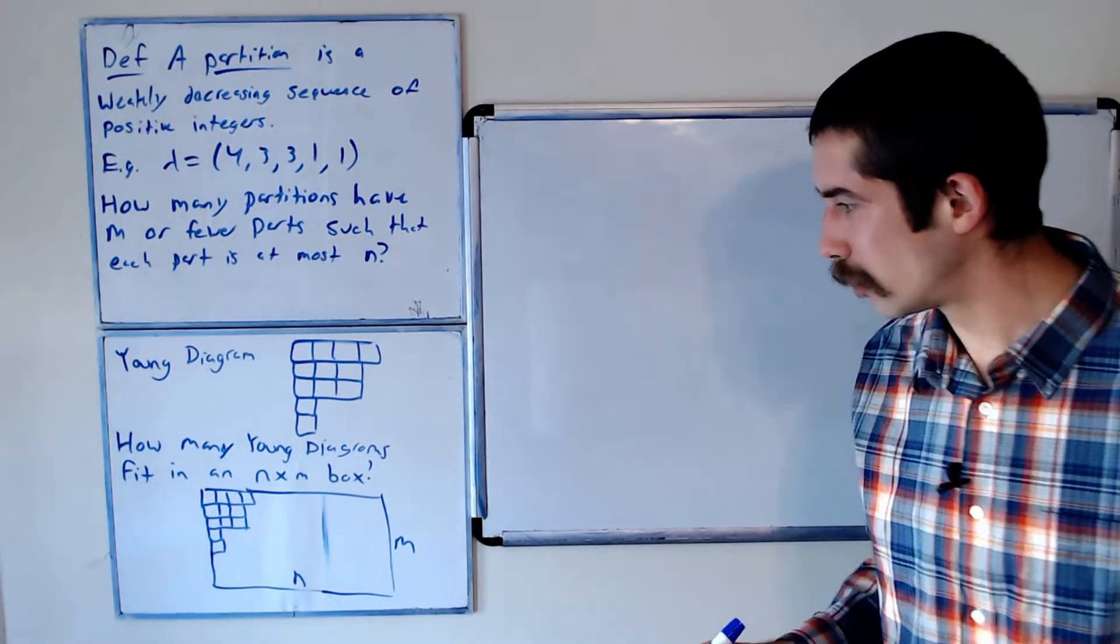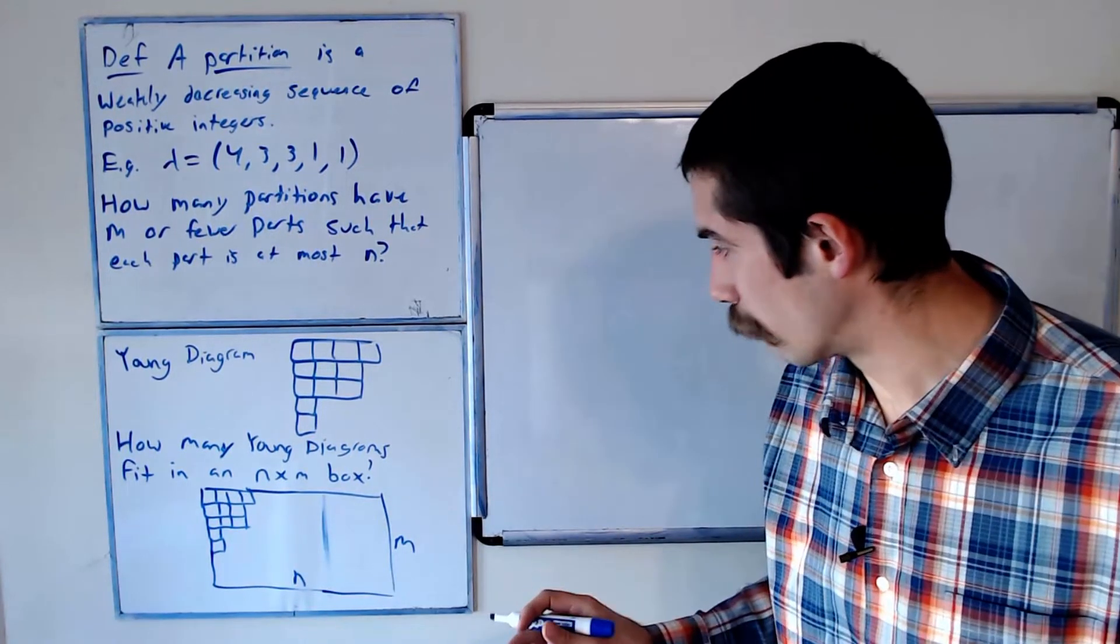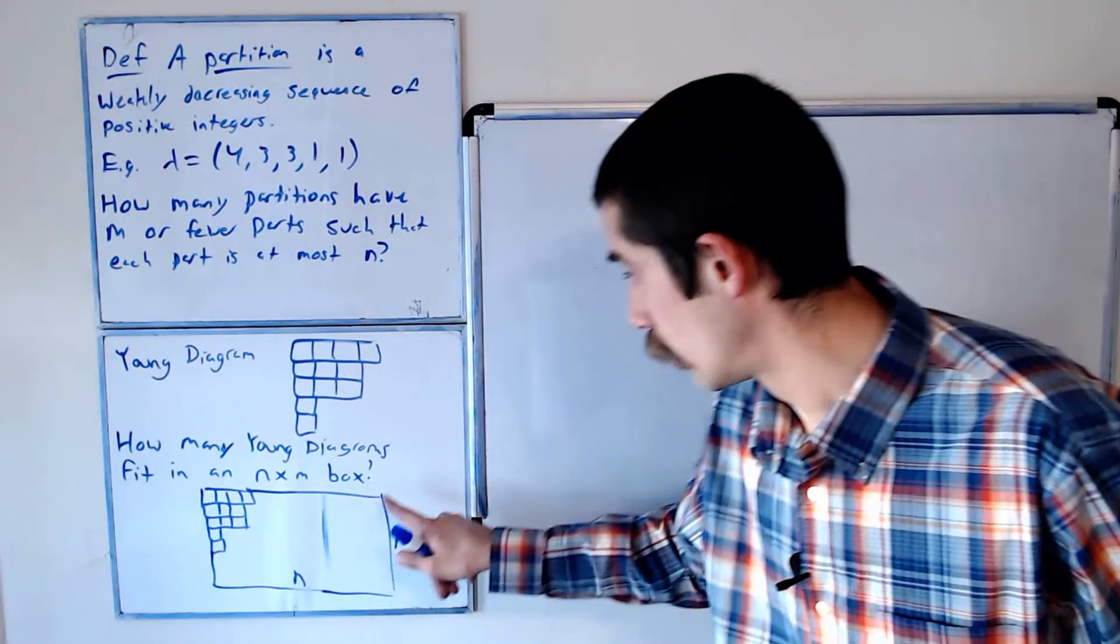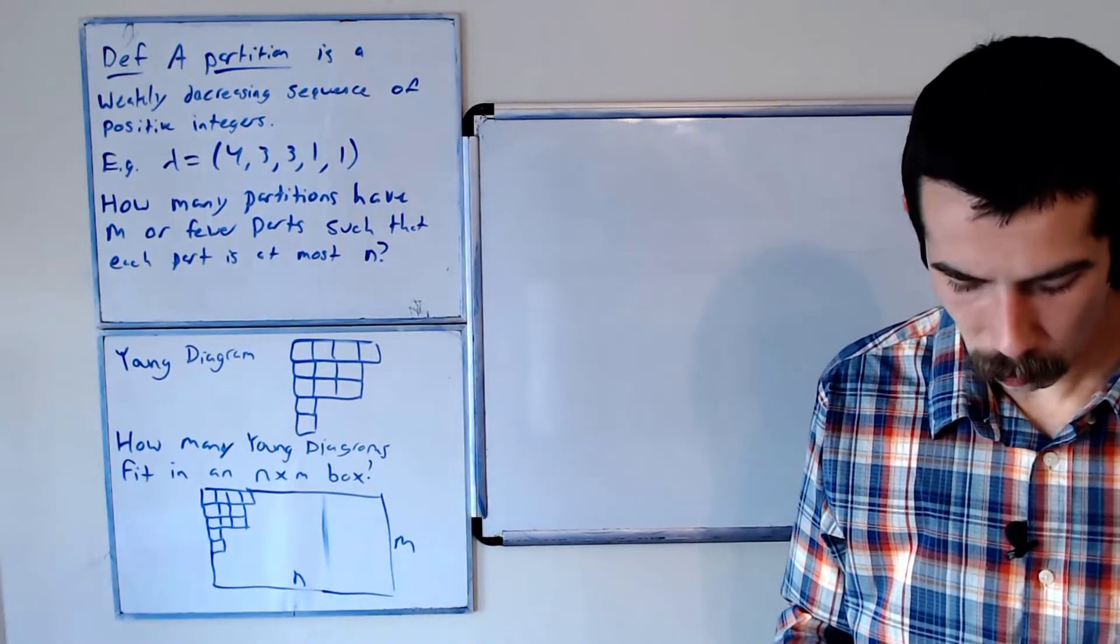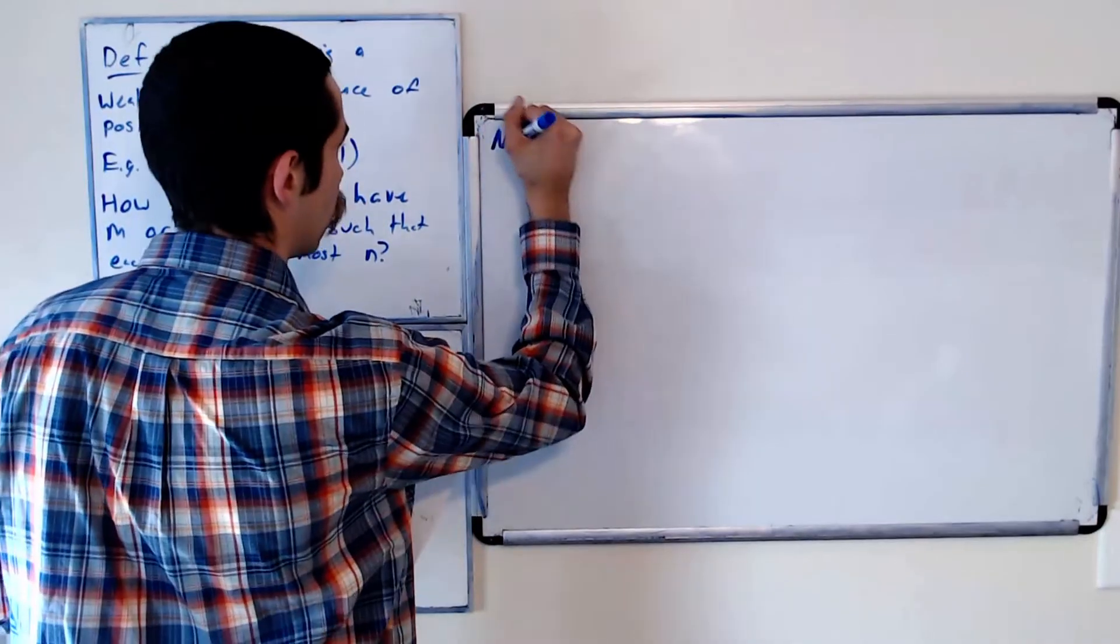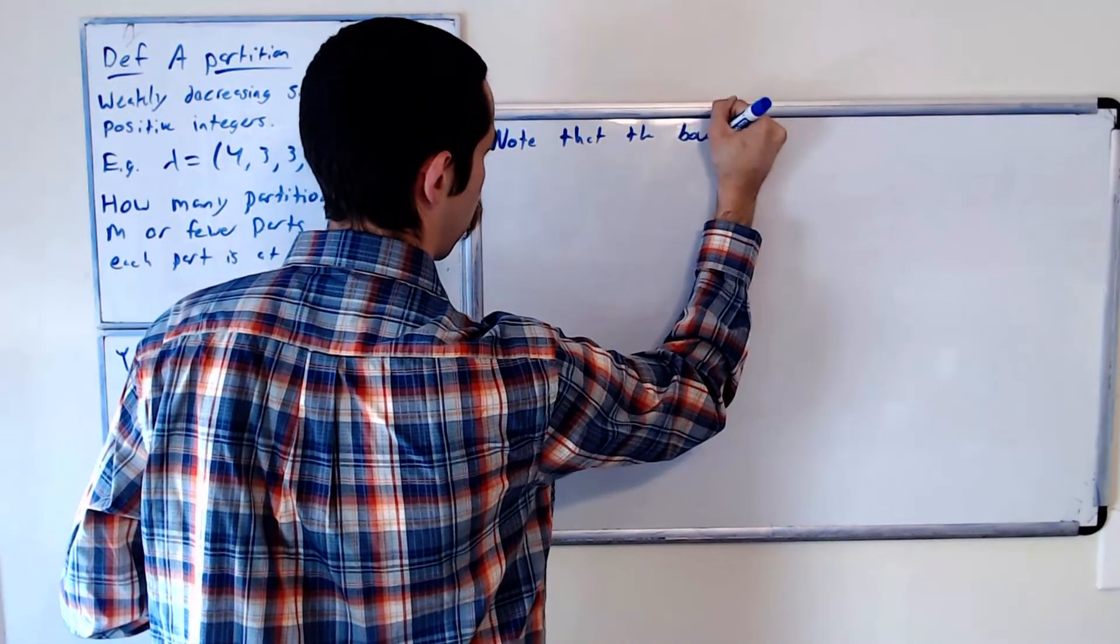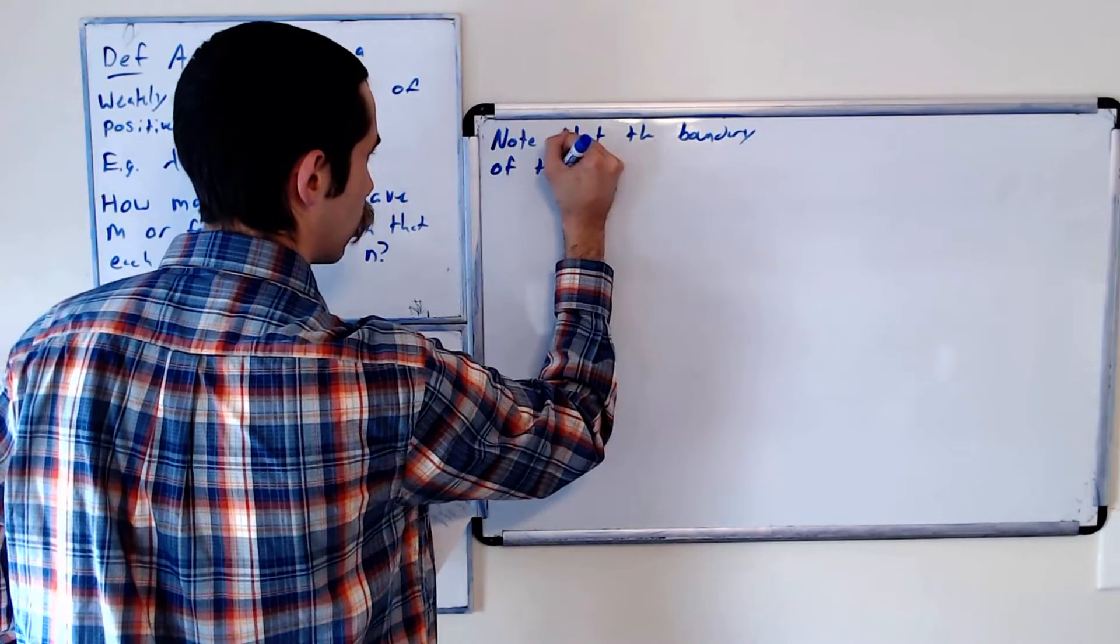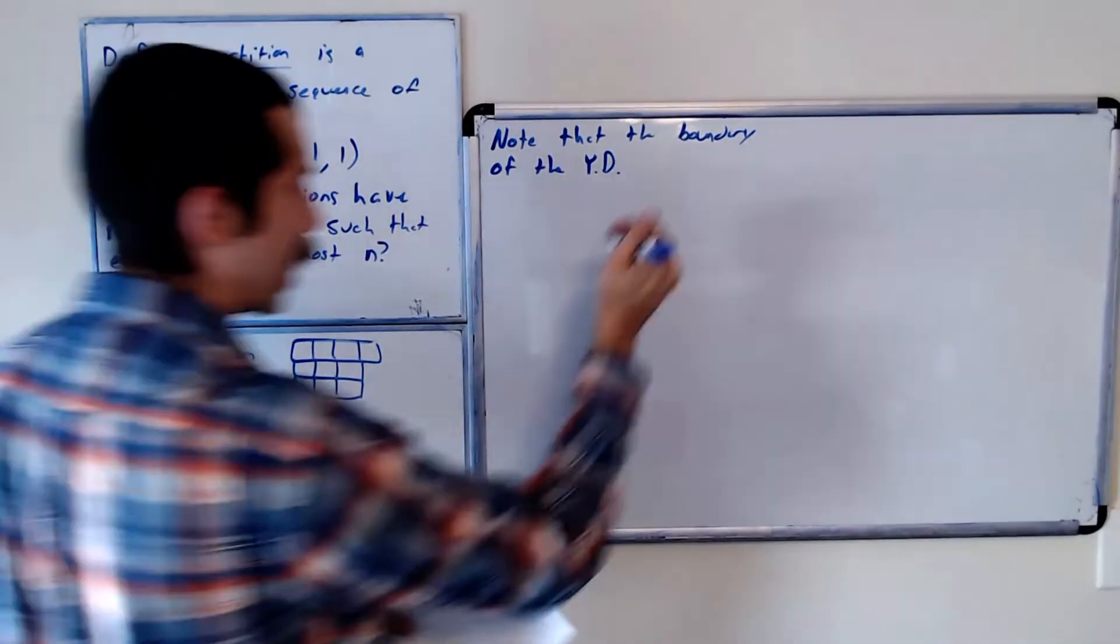Something to note is the boundary of our Young diagram is a lattice path from (0,0) to the point (N,M) using east and north steps. Note that the boundary of the Young diagram, I'll call it YD for short, is a lattice path with steps of